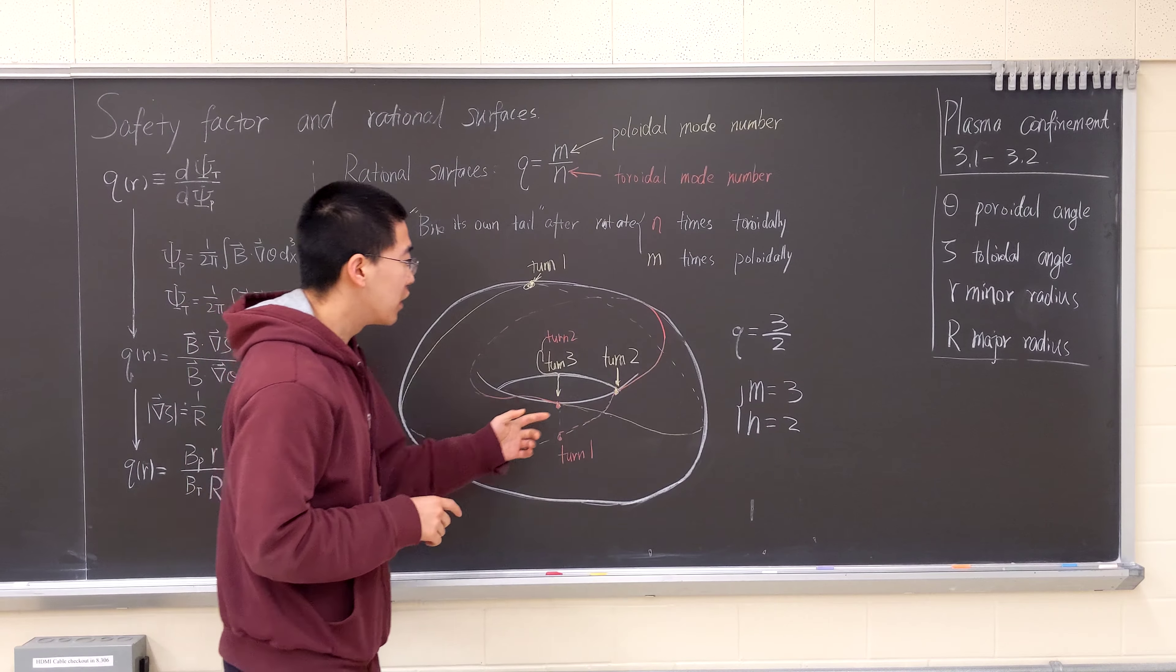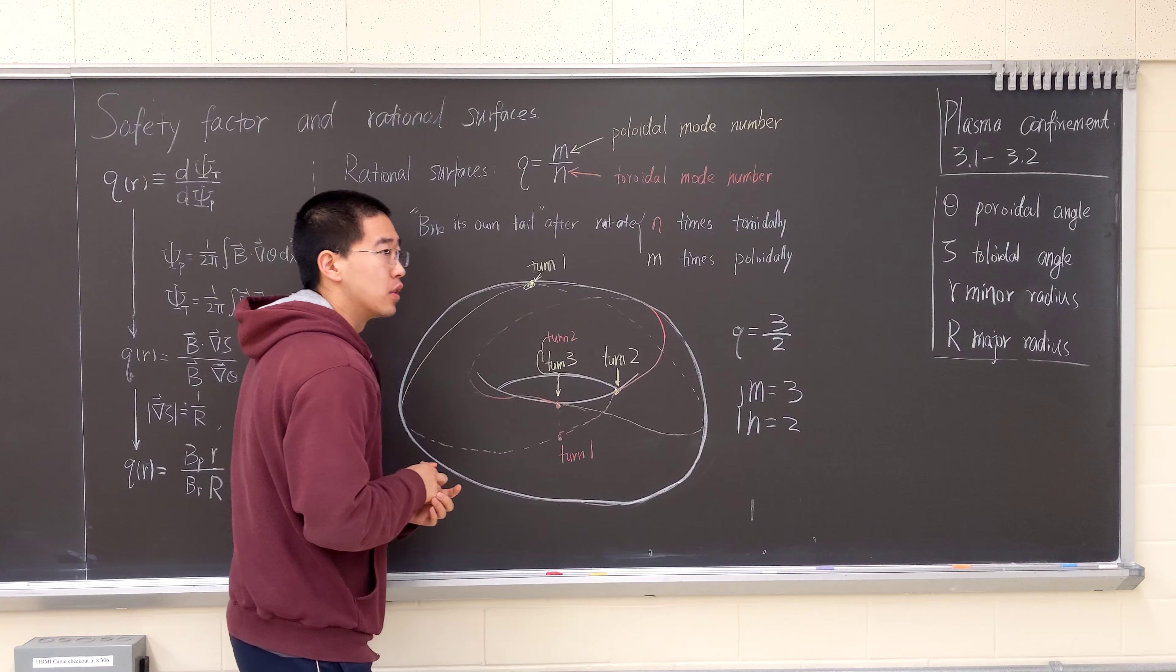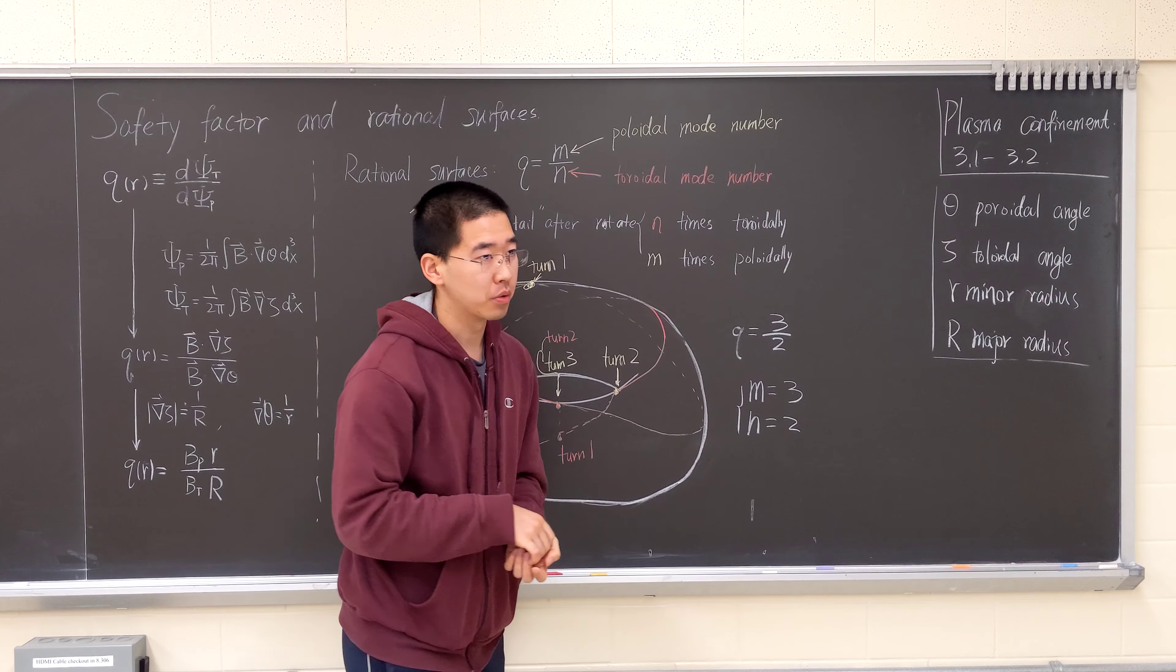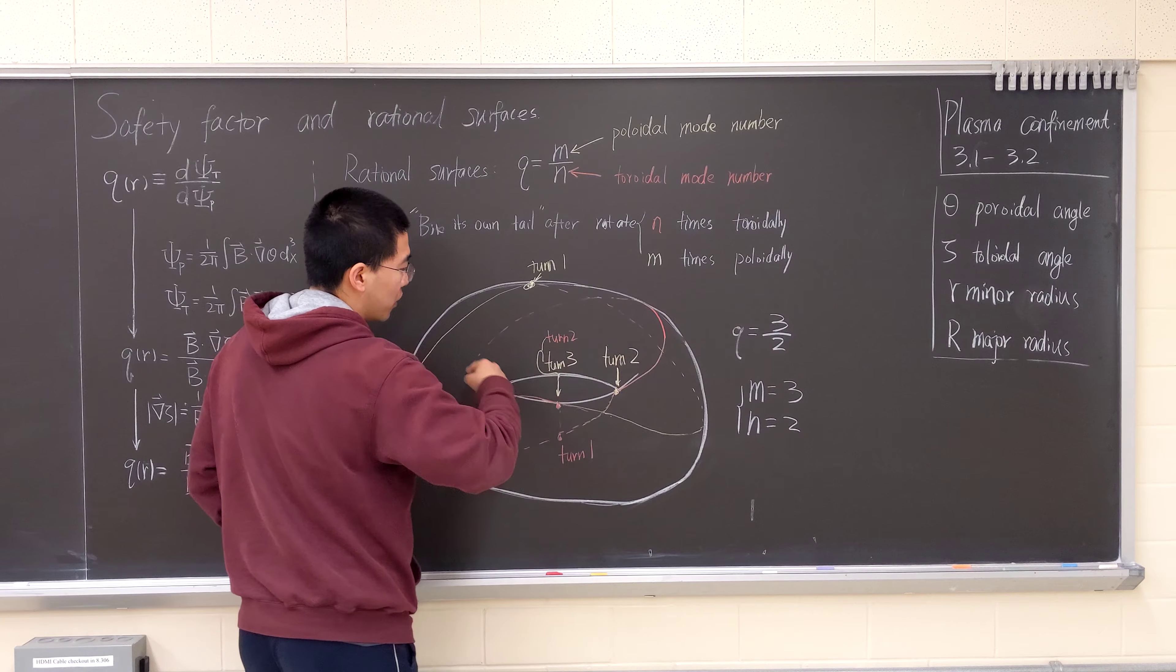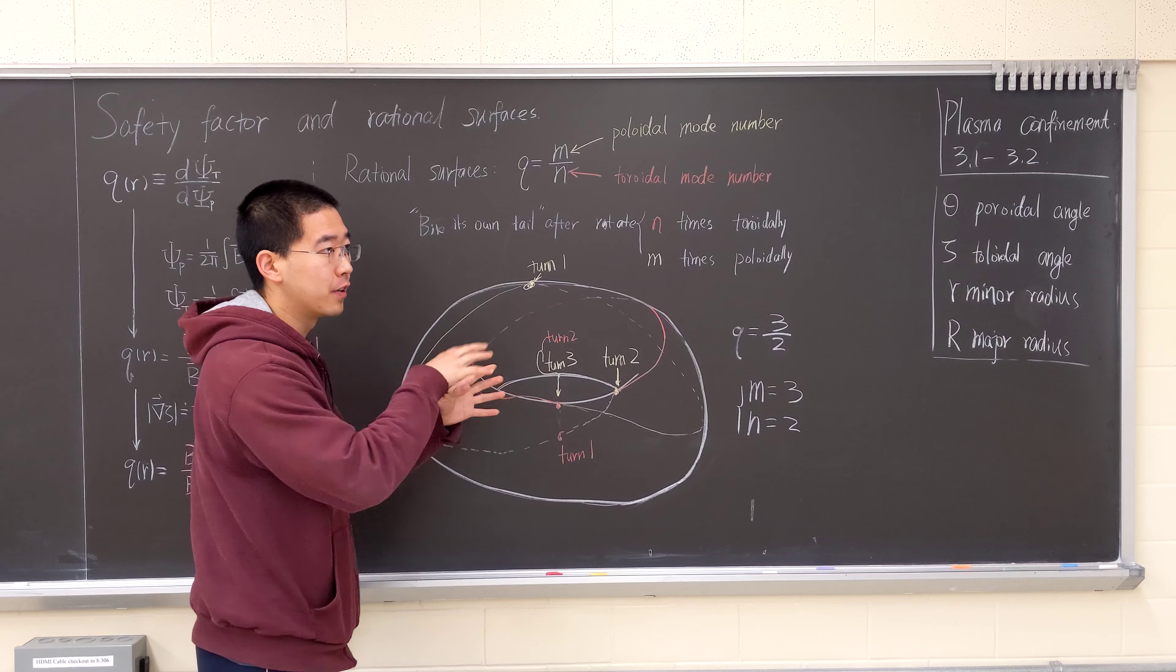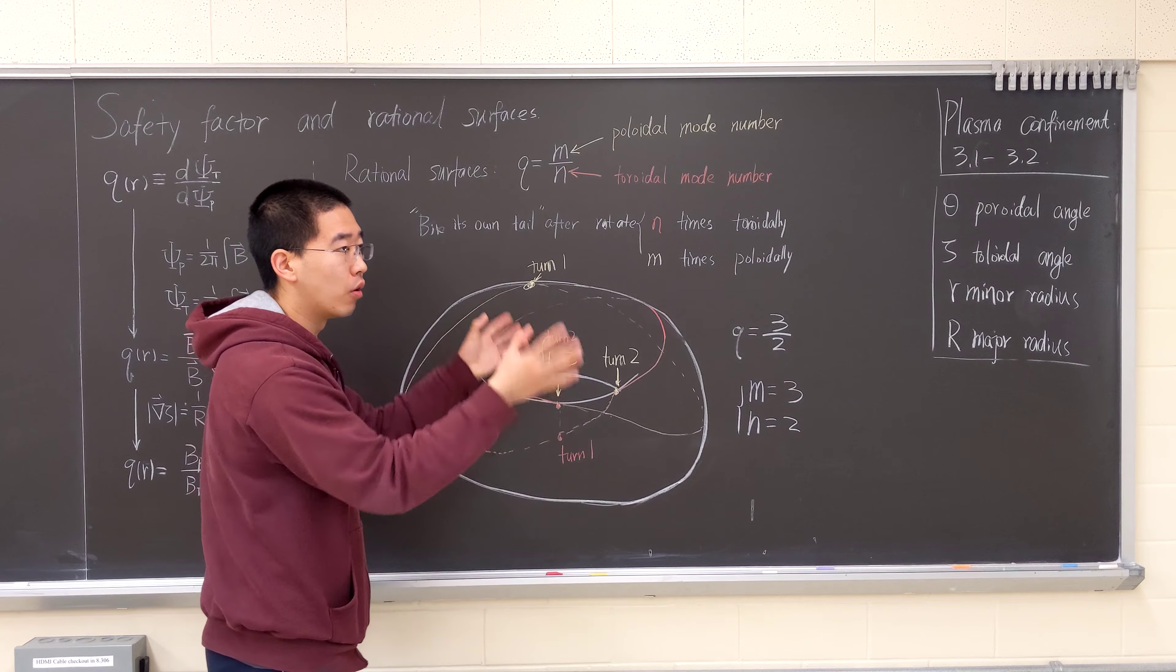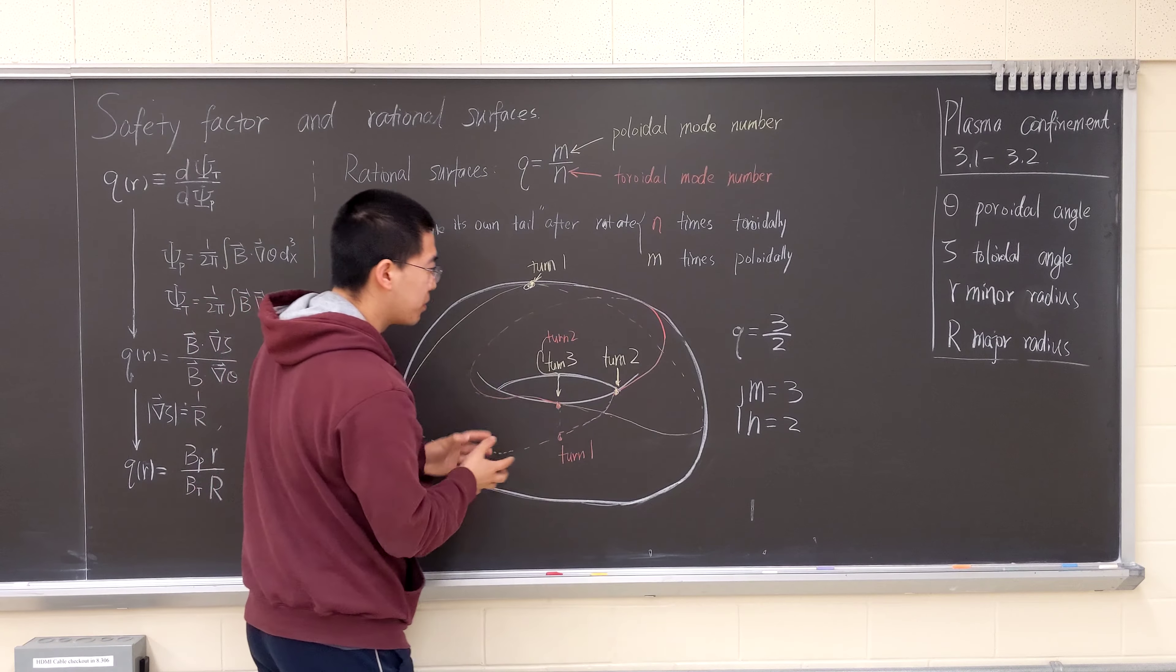If they're not rational, then say that q equals square root two, then this will rotate infinite times and pretty much the field line will fill out the whole space.